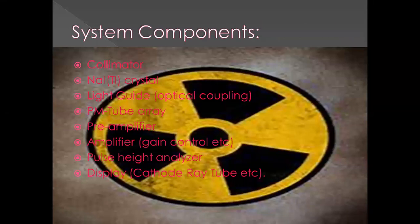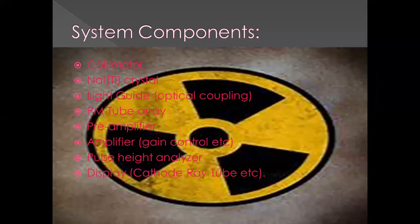Basically, inside the gamma camera we have a collimator, a filter made of lead, and a sodium iodide crystal. We also have light guides and optical coupling, a PMT tube, a preamplifier, a pulse height analyzer, and lastly a display cathode ray tube. These are the materials inside the gamma camera.